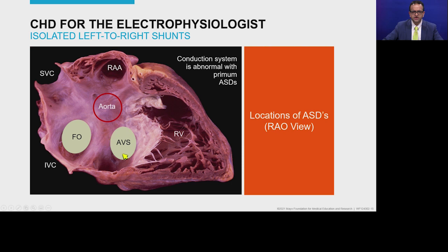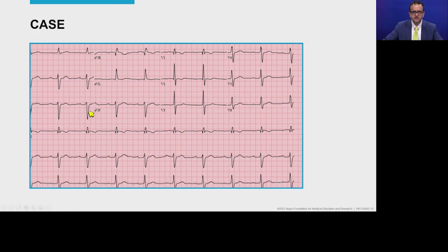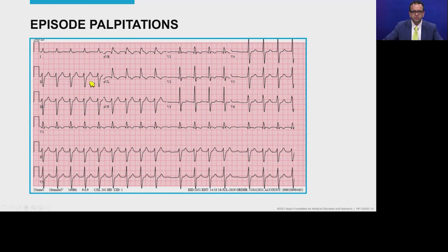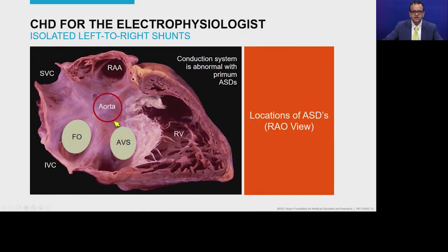Ostium primum ASD is a defect at the level of the AV septal location. Because it is close to the AV septum where the AV node also resides, at baseline these patients will have a slightly prolonged PR interval compared to ostium secundum ASD. The reason for left axis deviation is that as the defect is more close to the AV septum, the entire conduction gets displaced more downward, and you can also have a hypoplastic left anterior fascicle. Due to that, you get left axis deviation. The conduction system is abnormal in ostium primum ASD, but normal in ostium secundum ASD.